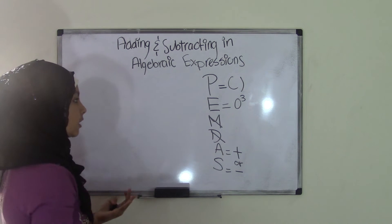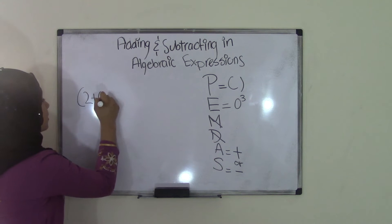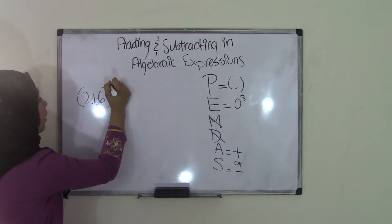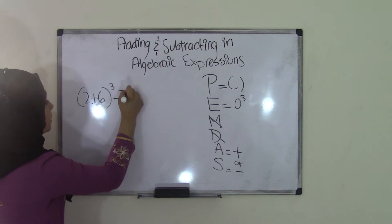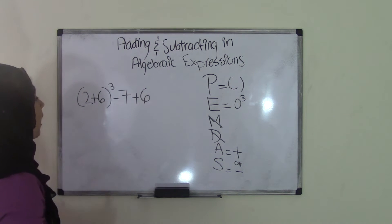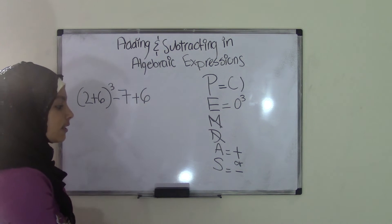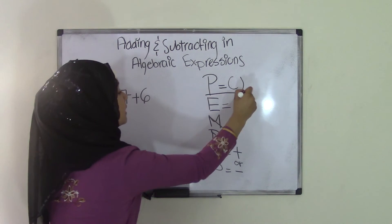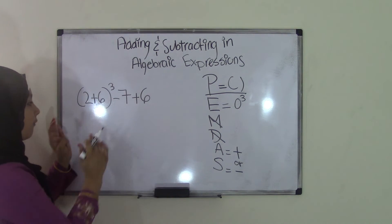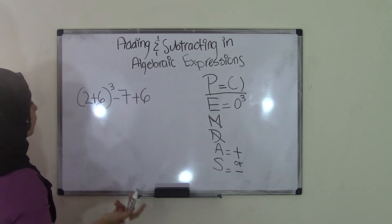Now, let's say we have an algebraic expression such as (2+6) to the power of 3 minus 7 plus 6. So now we have this algebraic expression. According to PEMDAS, or please excuse my dear Aunt Sally, parentheses comes first. So if you can see here, we have 2 plus 6 in parentheses, so we're going to solve this first.